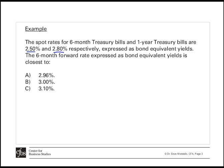These rates are expressed as bond equivalent yields, meaning the half-year interest rate is multiplied by 2 to produce an annualized interest rate — that is known as a bond equivalent yield. We need to calculate the 6-month forward rate, which is the forward rate that will start in 6 months for 6 months.